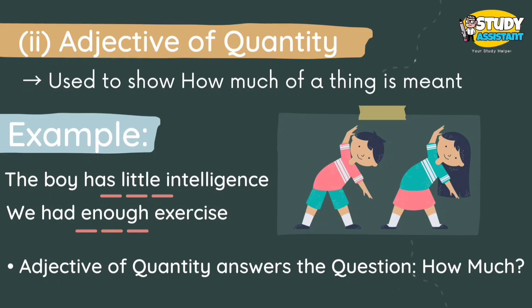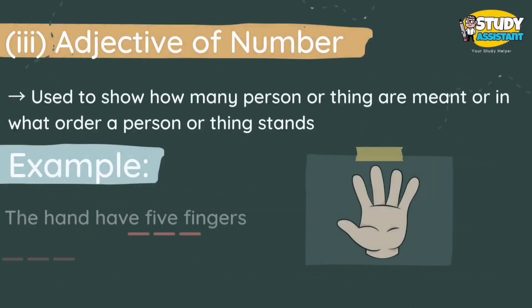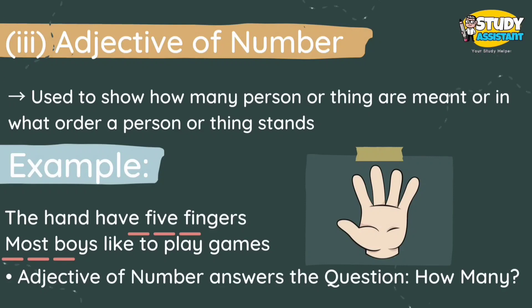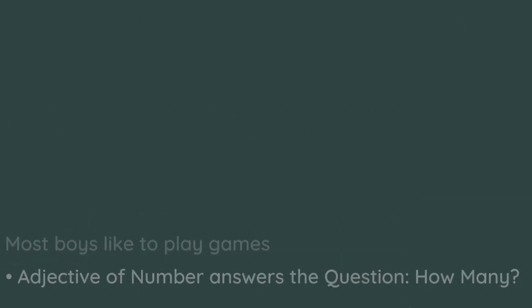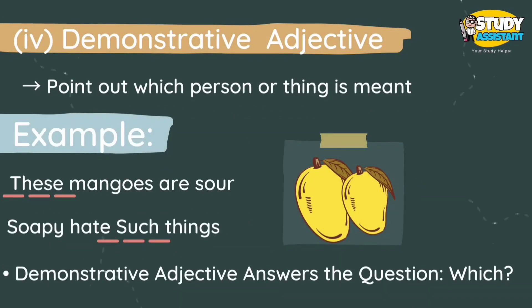Now we have reached adjective of number. It is used to show how many persons or things are meant, or in what order a person or thing stands. For example, 'The hand has five fingers' and 'Most boys like to play games.' Adjective of number answers the question 'how many?'